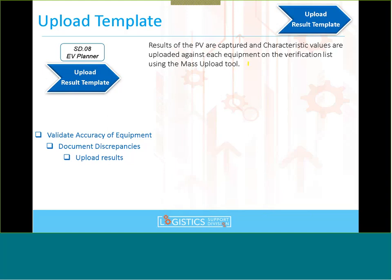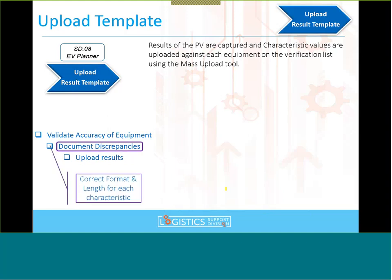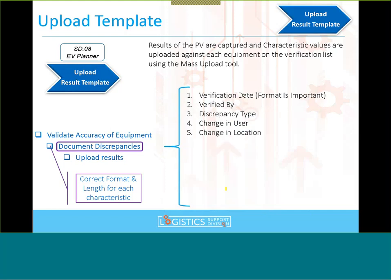It's very important to understand that right now we're only recording discrepancies — we're not making any changes to the equipment. That comes tomorrow. Right now we're just writing into the system that certain discrepancies exist and keeping a record of them. Correct format and length for each characteristic is critical; if we make a mistake in format, the PV template will return an error and won't let us generate the text file.